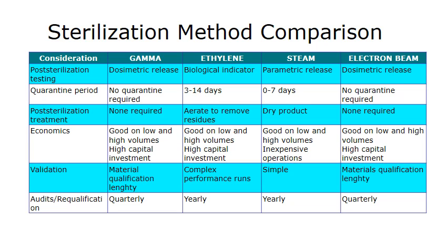For post-sterilization testing, there are biological indicators for ethylene oxide, or dosimetric release for the other two. There's no quarantine required for gamma and electron beam, so they are safer to use for personnel. However, for ethylene oxide and steam, there's a quarantine of between three and 14 days.